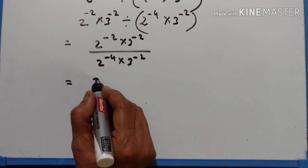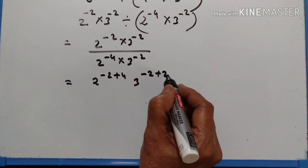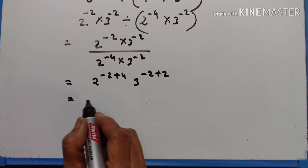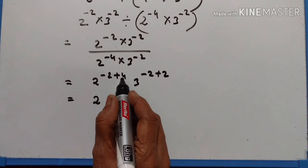2 raised to the power of minus 2 plus 4, and 3 raised to the power of minus 2 plus 2. 2 raised to the power of 4 minus 2 is equal to 2. 3 raised to the power of minus 2 plus 2 is equal to 0. Therefore, 3 raised to the power of 0 is equal to 1. So the answer is 2 squared, that is 4.